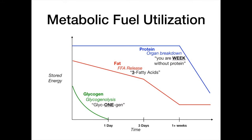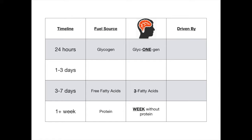Now let's fill in the summary chart to keep things straight. At 24 hours — up to one day — you use glycogen, remembered by 'Glyconegen.' From three to seven days, it's free fatty acids, remembered by 'Three Fatty Acids.' And at one week or more, protein is the primary fuel source utilized during starvation — remembered by 'you're weak without protein,' where weak reminds you of one week or more.